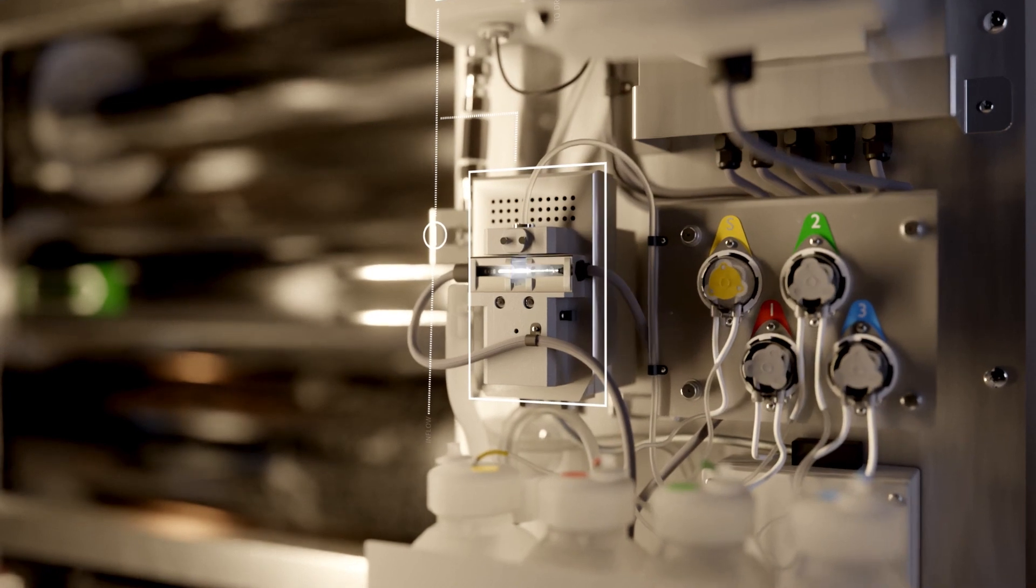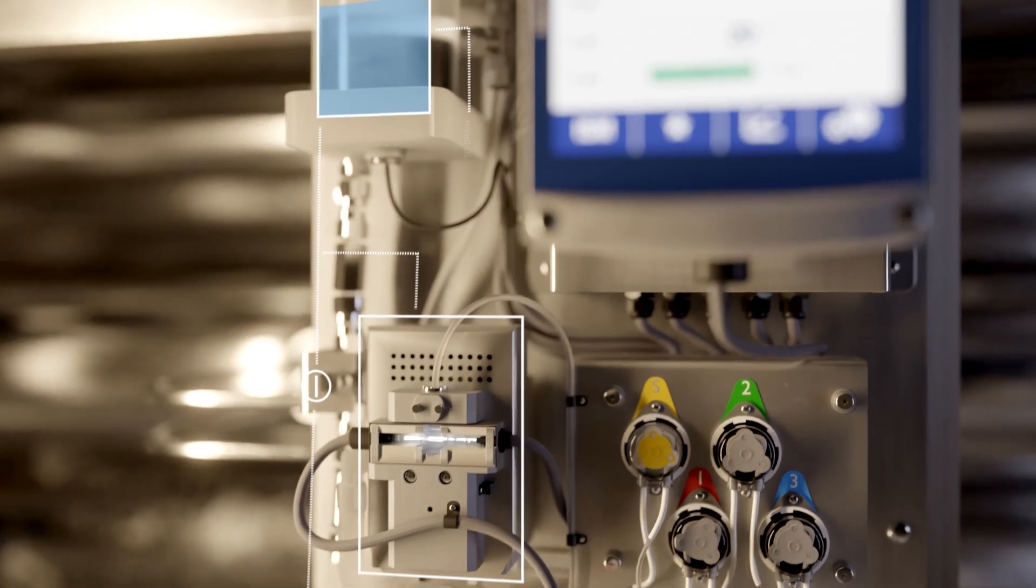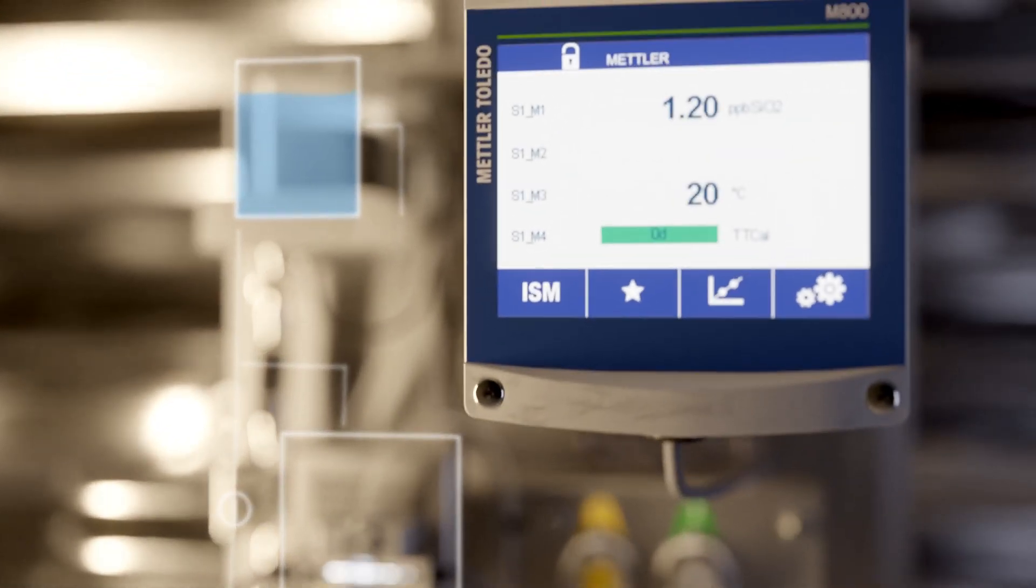The absorption of the light received at the photodetector is analyzed and converted to the silica concentration measurement, which is displayed on the analyzer's transmitter.